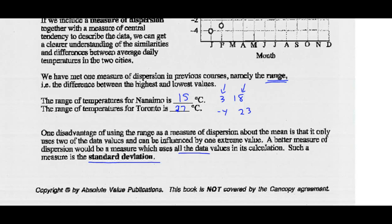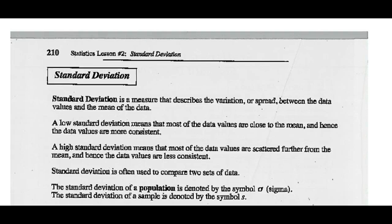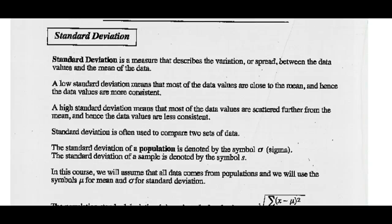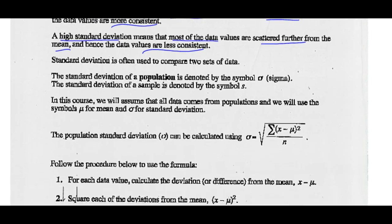That measure is called standard deviation. Standard deviation describes the variation or spread between the data values and the mean. A low standard deviation means most of the data is close to the mean — the data values are more consistent. A high standard deviation means most of the data values are scattered further from the mean — the data values are less consistent. Standard deviation is often used to compare two sets of data. Standard deviation of a population is denoted by the symbol sigma; standard deviation of samples is denoted by s. For this course, we'll always assume population, so we use mu for mean and sigma for standard deviation.